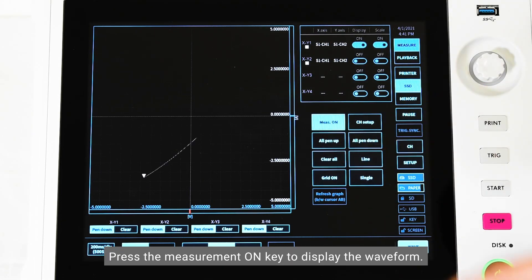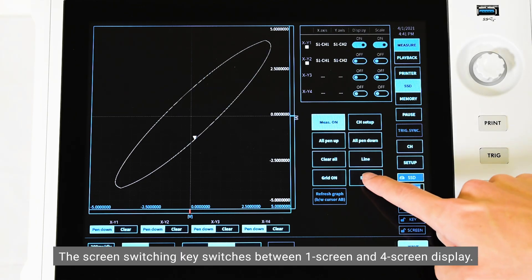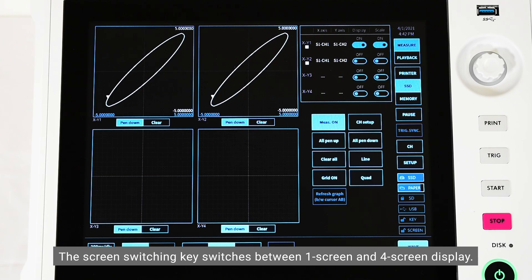Press the XY key to switch to the XY display screen. Press the measurement on key to display the waveform.